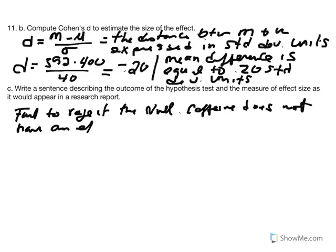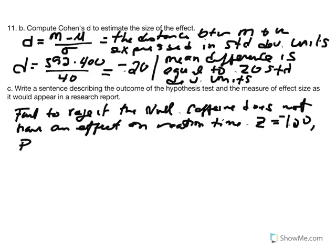In this context, that means caffeine does not have an effect on reaction time. We cite our statistics: z equals negative 1.20. The probability of obtaining the sample mean equal to 392 is greater than a 5% chance. Our supporting statistic: d equals 0.20. We fail to reject the null hypothesis — caffeine does not have an effect on reaction time. Z equals negative 1.20, the probability of obtaining a sample mean of 392 is greater than our alpha of 5%, and d equals 0.20.